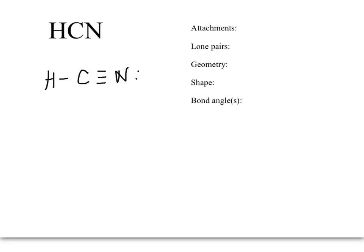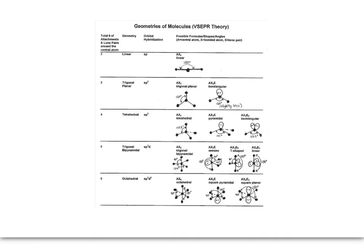Next we have HCN. Here is the Lewis dot structure. I'm going to look at my central atom, carbon. There are two atoms attached to it. And no lone pairs on the carbon. So two plus zero is two.